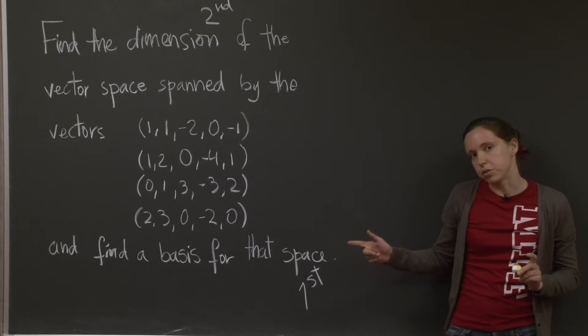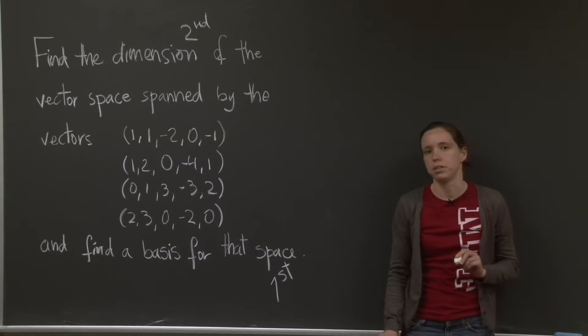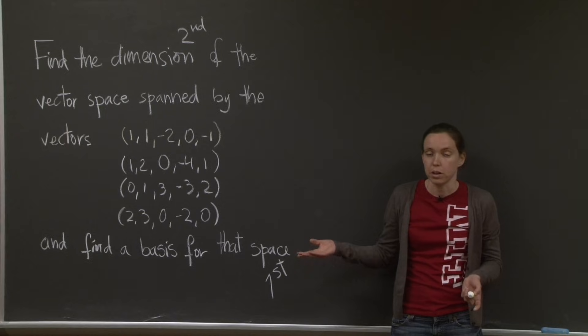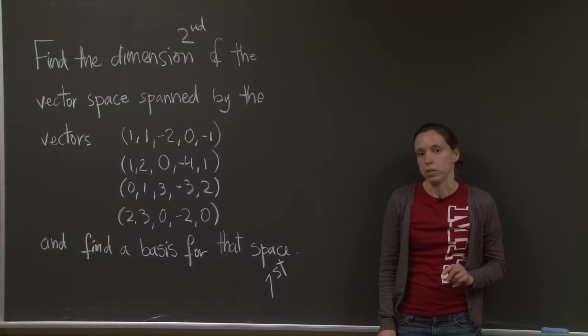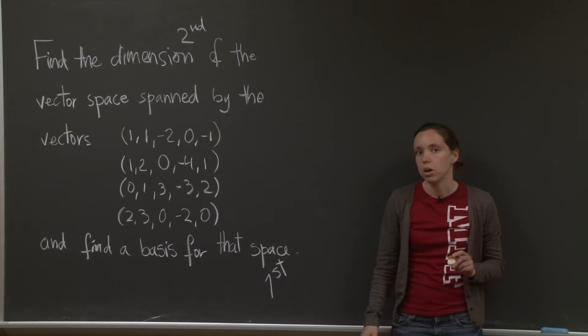So we want to find the basis for the vector space spanned by these four vectors. So you might be tempted to just say that a basis for this vector space is those four vectors, because they span the vector space. But there's another thing that a basis has to satisfy, and it is the elements of the basis have to be linearly independent. And we don't know that these are, so we have to check.